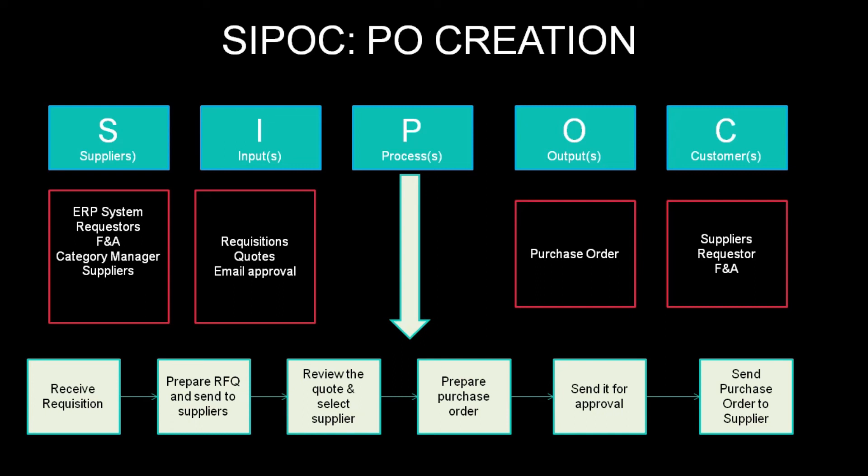What is the output of this process? A purchase order sent to the supplier is the output. The supplier receives the final purchase order, the requester gets the demand created as a purchase order, and Finance and Accounting gets an input to start the invoice processing work.